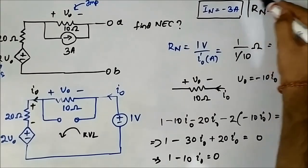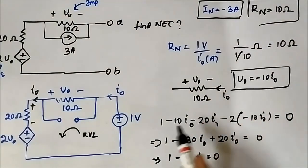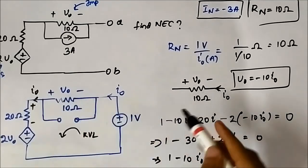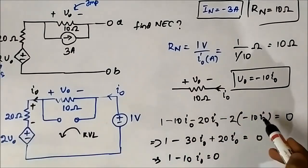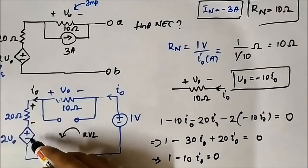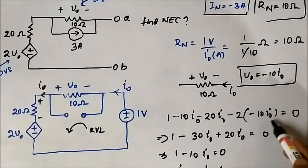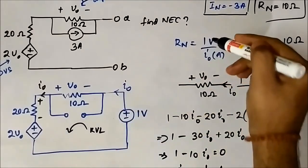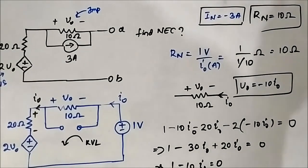To recap: in the KVL equation I directly substituted V0 = minus 10*I0 throughout. Starting from 1, adding plus V0 as minus 10*I0, then minus 20*I0, then minus 2*V0 substituted as minus 2 times minus 10*I0 equals zero. We obtained I0 = 1/10 A and Rn = 10 ohm. This completes the fourth question related to Norton circuit involving dependent sources.